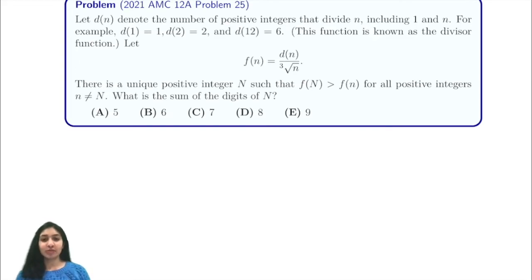Hi everyone, in this video we're going to be going through 2021 AMC 12A Problem 25. It says let d(n) denote the number of positive integers that divide n, including 1 and n, and then they give us this function f(n) and they let it be d(n) over cube root of n.